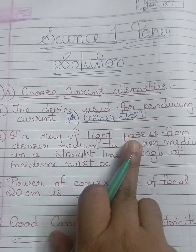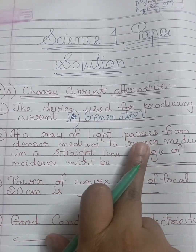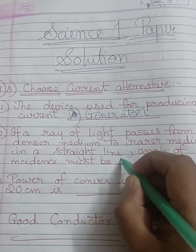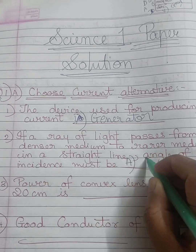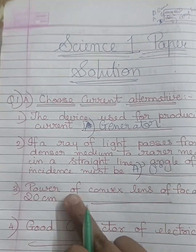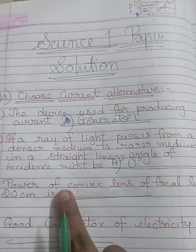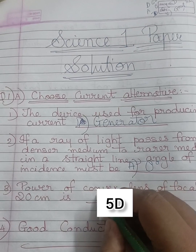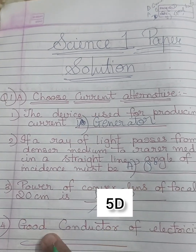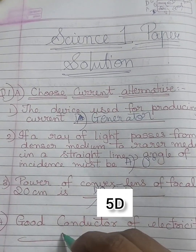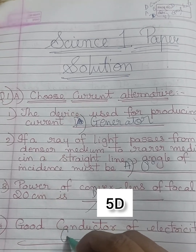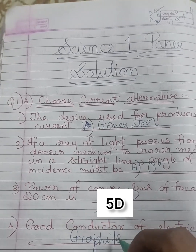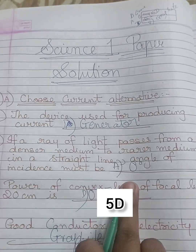If a ray of light passes from a denser medium to a rarer medium in a straight line, the angle of incidence must be zero degrees. Power of a convex lens of focal length 20cm is 5D. A good conductor of electricity is graphite.